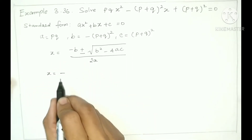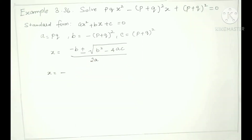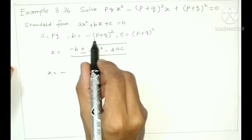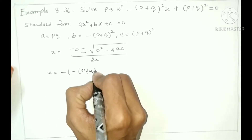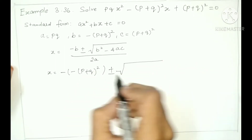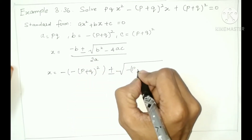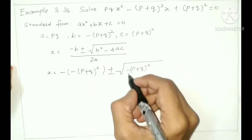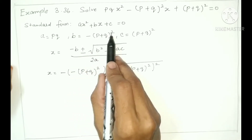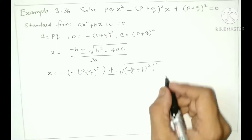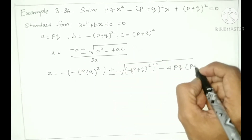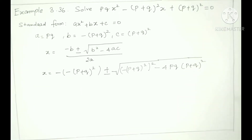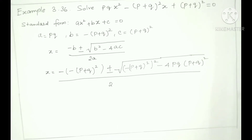X = [-B ± √(B²-4AC)] / 2A. So substituting: B = -(P+Q)², so -B = -(-(P+Q)²) = +(P+Q)². B² = [-(P+Q)²]² = (P+Q)⁴. And 4AC = 4 × PQ × (P+Q)². Divided by 2A = 2PQ.